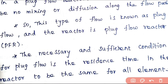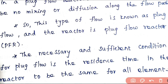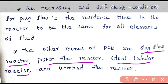The necessary and sufficient condition for plug flow is that the residence time in the reactor must be the same for all elements of fluid — meaning the time spent by each and every molecule inside the reactor should be the same. The other names of plug flow reactor are slug flow reactor, piston flow reactor, ideal tubular reactor, and unmixed flow reactor.